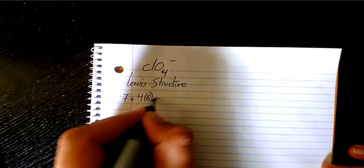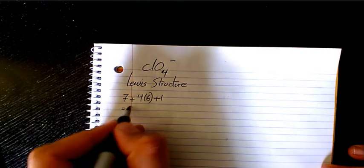So I start with counting number of total valence electrons. Chlorine is seven, oxygen six, so we have four of them plus one, that makes it 32.